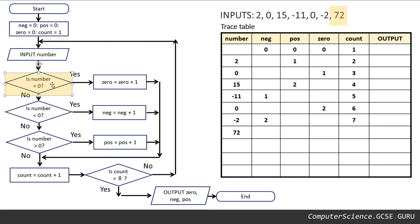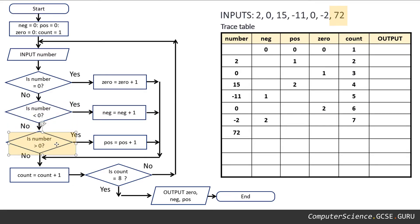Is it equal to zero? No, 72 is not zero. Is it less than zero? No, 72 is positive. Is it greater than zero? Yes, 72 is greater than zero. So pos is pos plus one — our previous value of pos was two, plus an extra one is three.